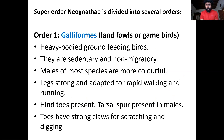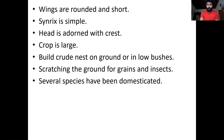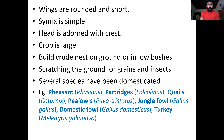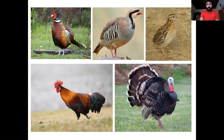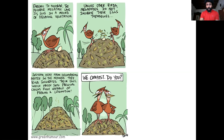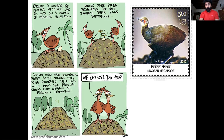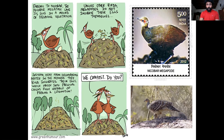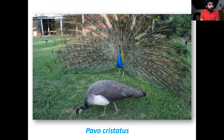Among almost 20 orders in Neognathae, 16 orders are chosen for our syllabus, of which six orders have been covered so far. The first is Galliformes, or landfowls, which includes pheasant, partridge, quail, peafowl, jungle fowl, domestic fowl, and turkey. These are all called game birds and many are domesticated. The Nicobar megapode is an endemic bird of Nicobar islands. The example for Galliformes is Pavo cristatus, the peafowl.